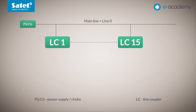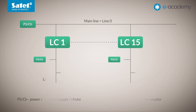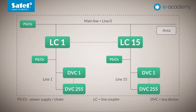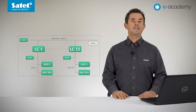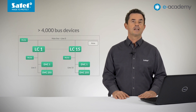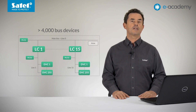The structure created in this way — containing the main line and no more than 15 secondary lines coupled to it — is called an area. A maximum of 255 devices can be installed in each of the secondary lines. The primary line, on the other hand, can have one more device, for a total of 256. However, the number of all line couplers operating in an area must be deducted; the maximum number of these is 15. To sum up, a total of up to more than 4,000 bus devices can be installed in a single area. In addition, separate power supplies are provided for each line, both main and secondary.